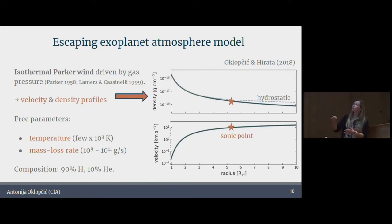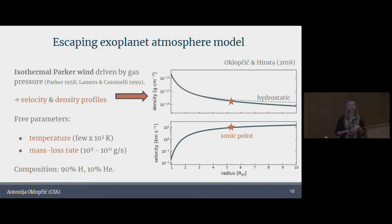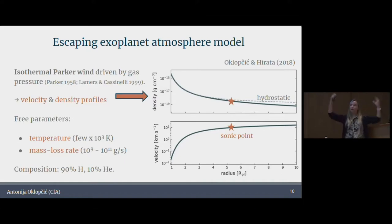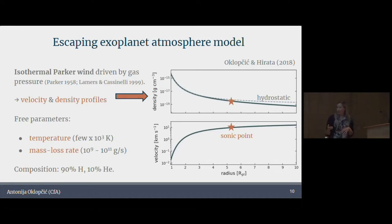I decided to do that. First, I assumed a simple atmospheric model based on isothermal Parker wind, which is a model developed back in the 1950s to describe solar wind, but we now believe it's actually a really good approximation for these planetary outflows. The density profile starts off fairly similar to a hydrostatic atmosphere but then drops off faster. It's not a static atmosphere — it has a radial velocity that starts off at very small values close to the planet, then at the sonic point transitions and becomes supersonic.